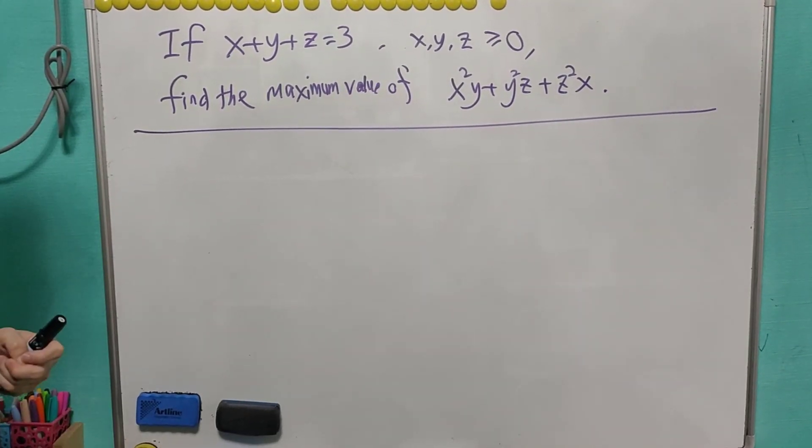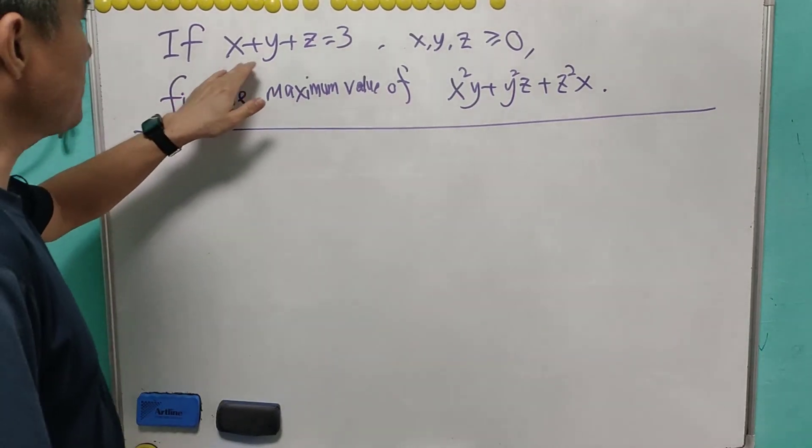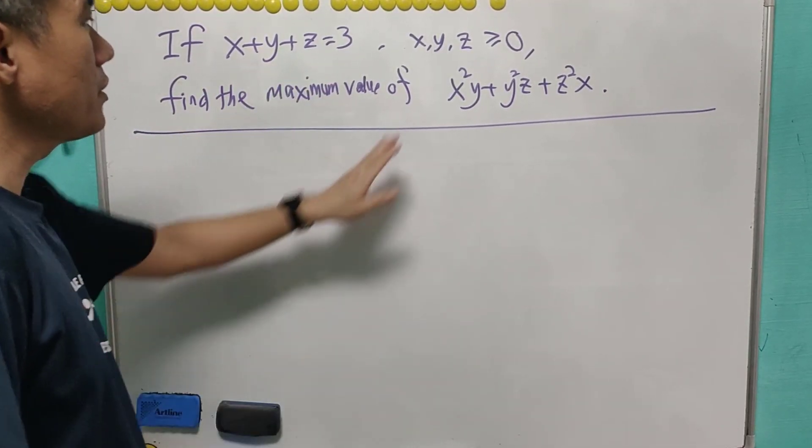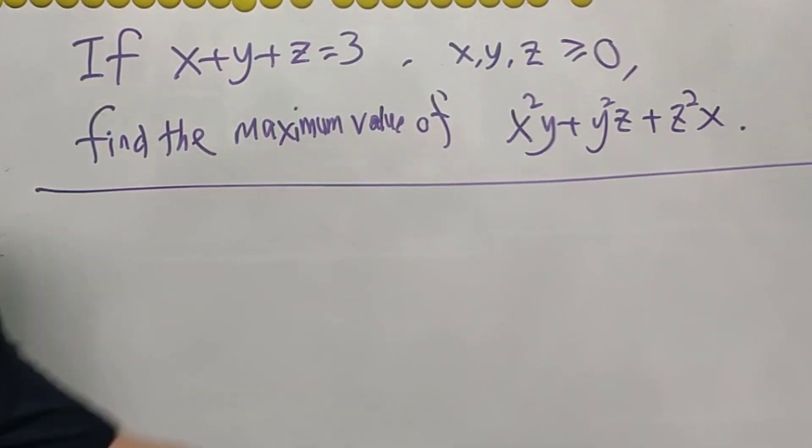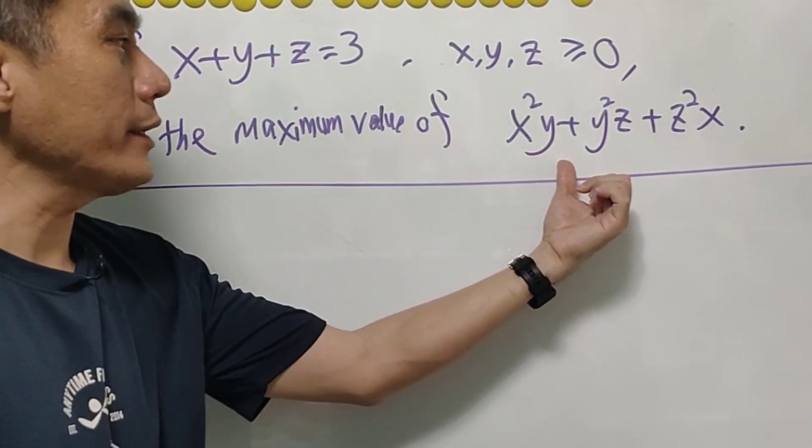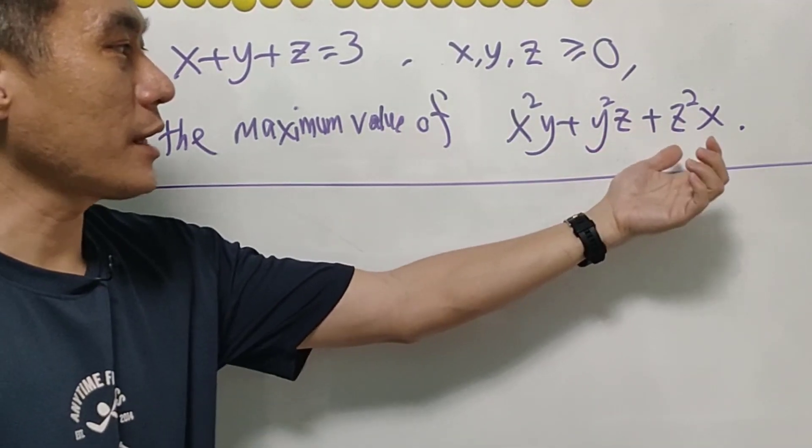So for today, we'll look at this optimization problem. The problem statement says if x plus y plus z equals 3, where x, y, z are non-negative, you're asked to find the maximum value of the expression x squared y plus y squared z plus z squared x.